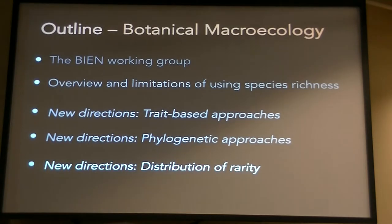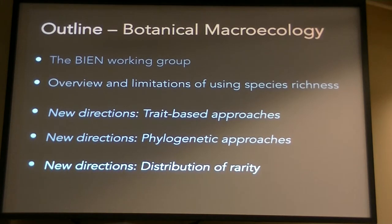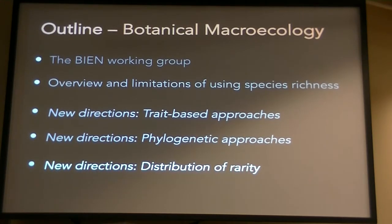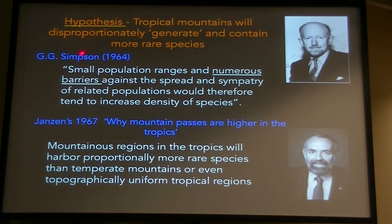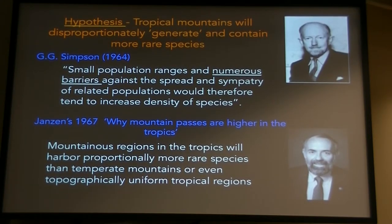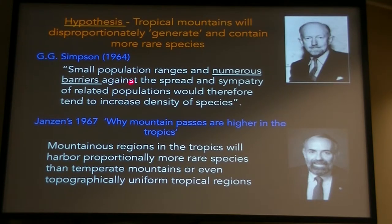To put these various pieces together, we also wanted to look at a measure that hasn't been linked to diversity per se, but I think is quite important: the distribution of rarity — where all the rare things are. Going back to Simpson, the thought is that tropical mountains will disproportionately generate and contain more rare species. Here, rarity is linked not only to abundance but to sizes of geographic ranges. Small population ranges and numerous barriers within tropical mountains will protect against dispersal and increase the density of rare species within sympatric populations.